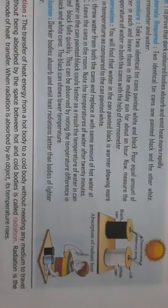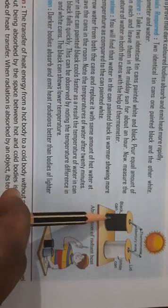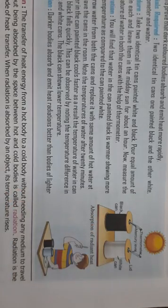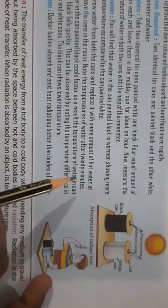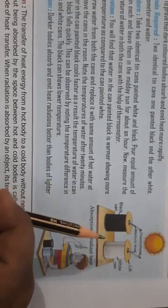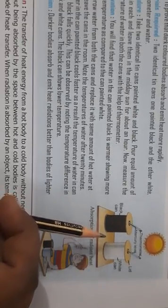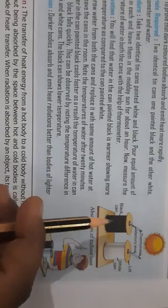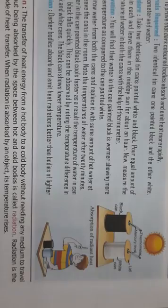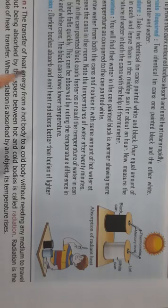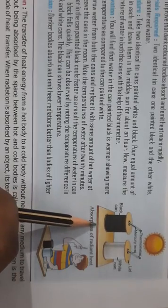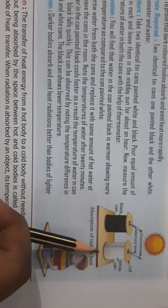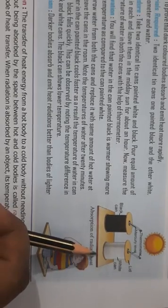You can do an experiment. Take two cans — one covered with black paper and another covered with white paper. Pour equal amounts of water and leave them in sunlight for almost an hour, then use a thermometer to measure the temperature. You will find that the black can is more hot compared to the white can. This proves that darker bodies absorb more heat and also emit heat radiation better, whereas lighter bodies do not absorb much heat. That is why during summers, we prefer to wear light-colored clothes.